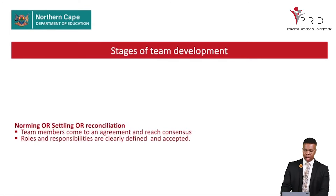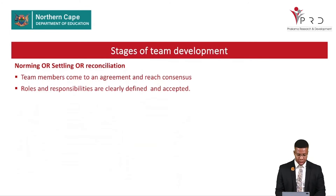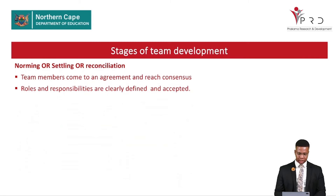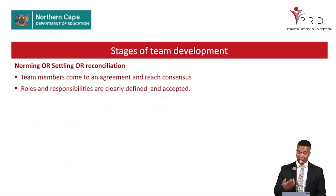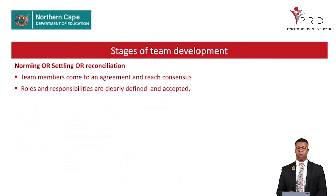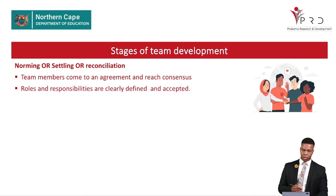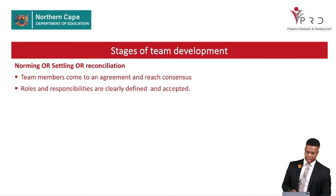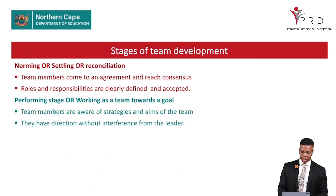The third stage is norming, also called settling or reconciling. During this stage, team members come to an agreement and reach consensus. Rules and responsibilities are clearly defined and accepted by team members. After the conflict of the storming stage, members now agree with each other on how they are going to do things.